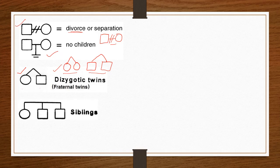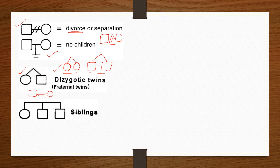Siblings — brothers and sisters — are represented by the children of a couple connected to a horizontal sibling line. For example, a couple — one circle married to one square — may have three children, and those children are brothers and sisters considered as siblings.